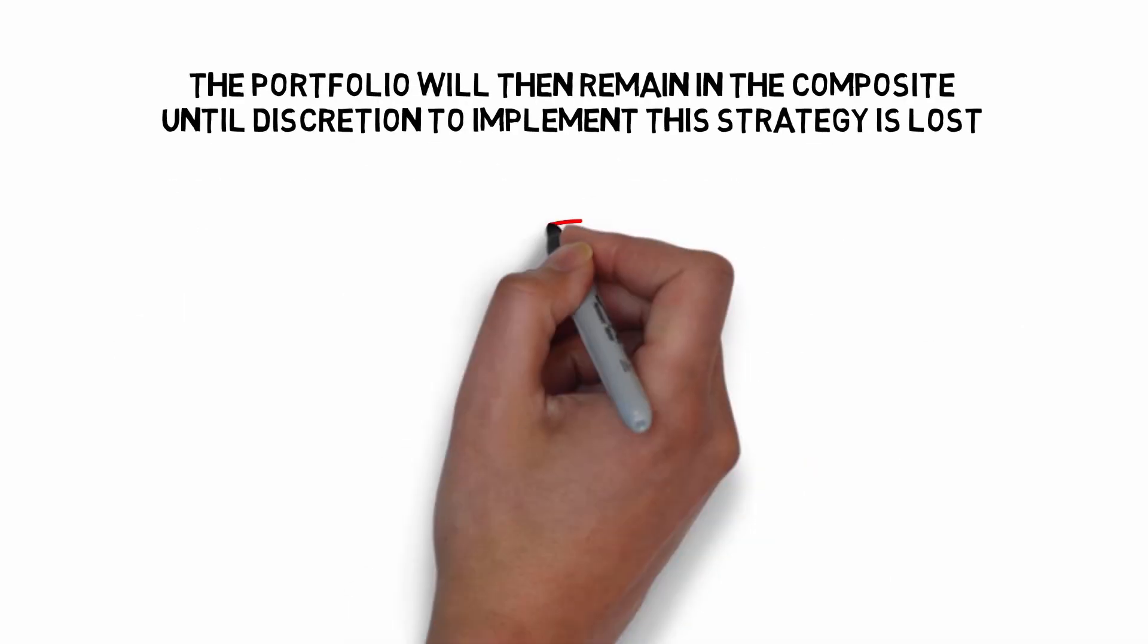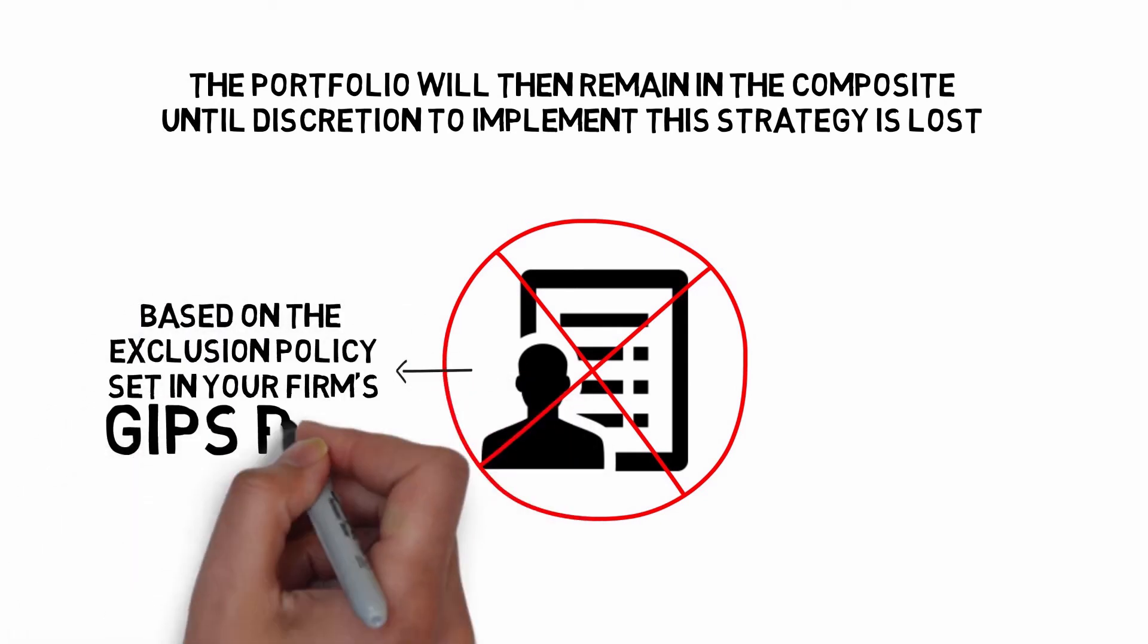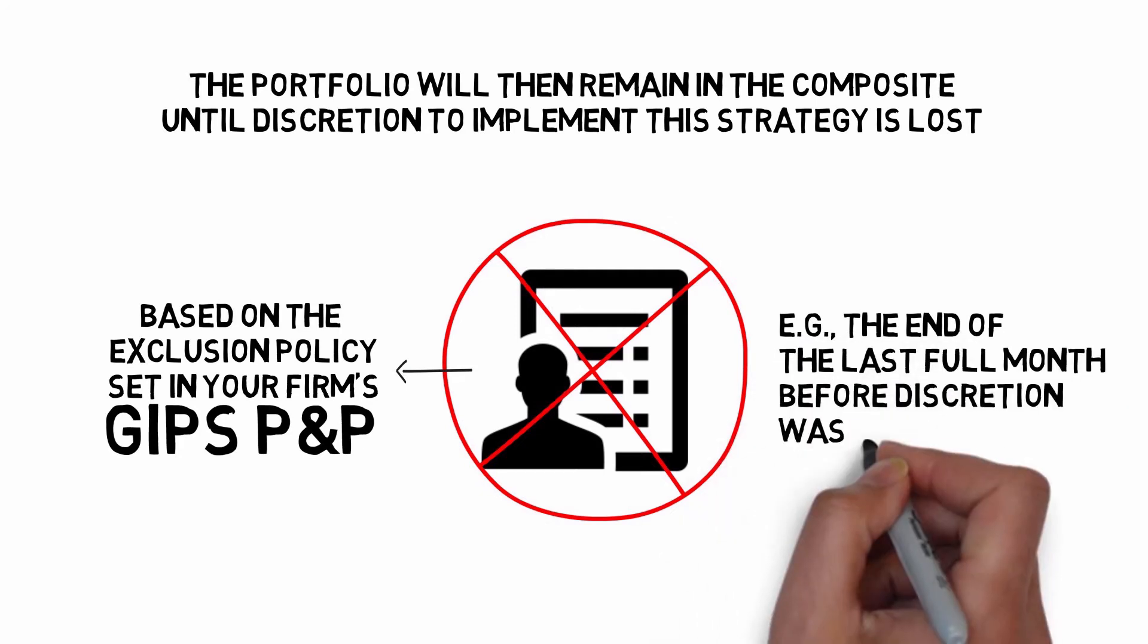The portfolio will then remain in the composite until discretion to implement this strategy is lost, at which point the portfolio will be excluded from the composite based on the exclusion policy set in your firm's GIPS P&P. For example, the end of the last full month before discretion was lost.